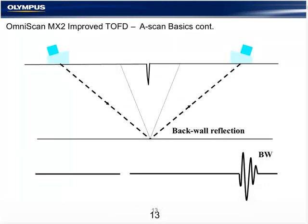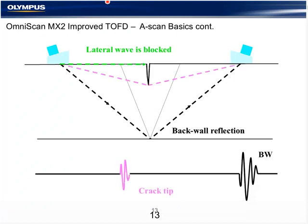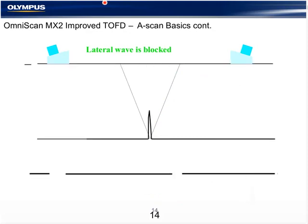When a surface-breaking flaw is inspected from the top, the lateral wave is obstructed and not present. The first signal we'll see is the crack tip. Any time we lose the lateral wave signal while maintaining the back wall or some other signals in between, it's an indication of a surface-breaking flaw, typically a crack.